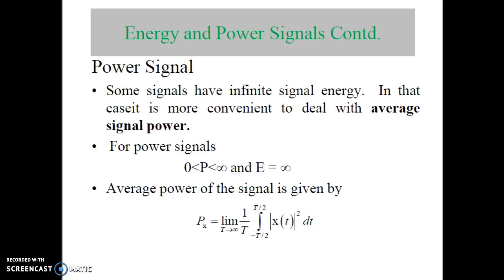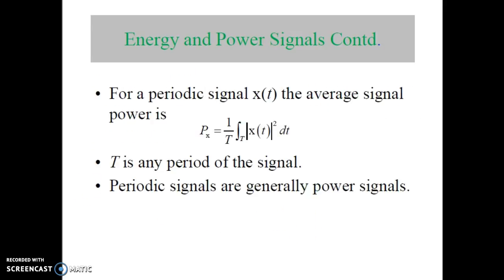Now let us see what is a power signal. Some signals have infinite signal energy. For power signals, the energy is infinite. The average power of a signal can be expressed as P_x equal to the limit as T goes to infinity of one upon T, times the integration from minus T upon 2 to plus T upon 2, of mod of x of t squared, times dt. For a periodic signal, the average signal power P_x equals one upon capital T, integrated over the period capital T, of mod of x of t squared, times dt, where capital T is any period of the signal. Basically, periodic signals are power signals.